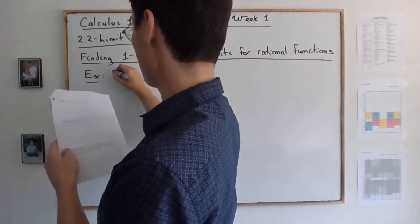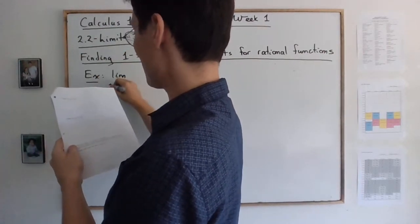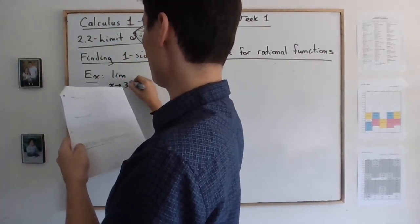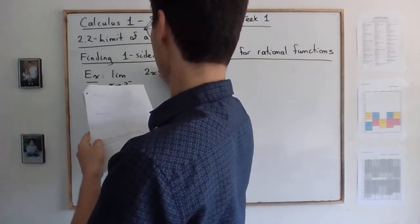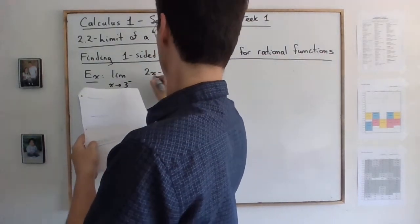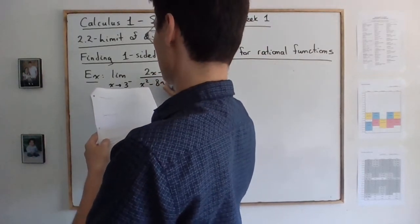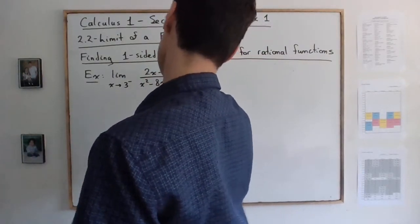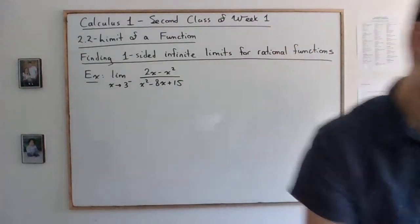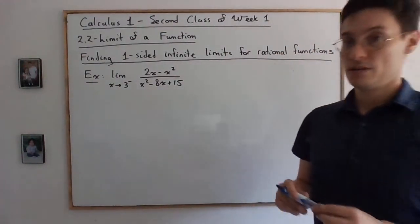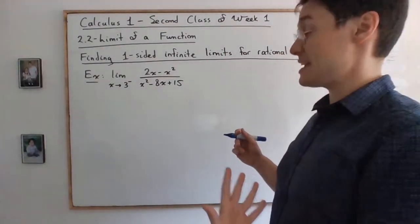So the example I have in mind is the limit as x is approaching 3 from below of 2x minus x squared over x squared minus 8x plus 15. So you want to find what this limit is.